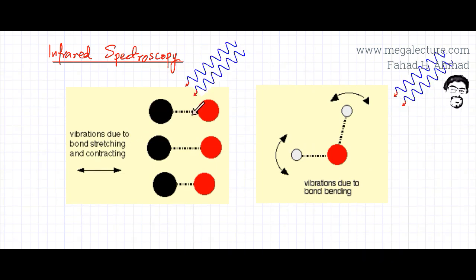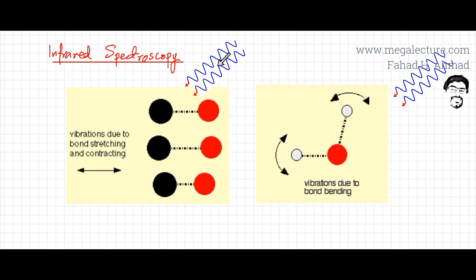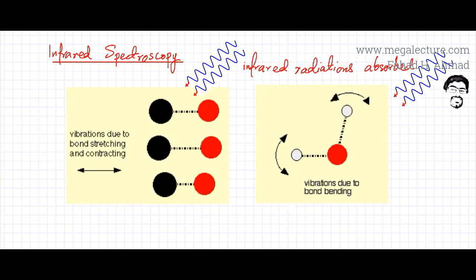Now, these bonds — when they stretch and contract or when they are vibrating — need to gain energy for that. So for these vibrations, they need to gain energy, and they gain energy from infrared waves or electromagnetic waves. So different frequencies from the infrared radiation are absorbed by these bonds when they vibrate, contract, or stretch.